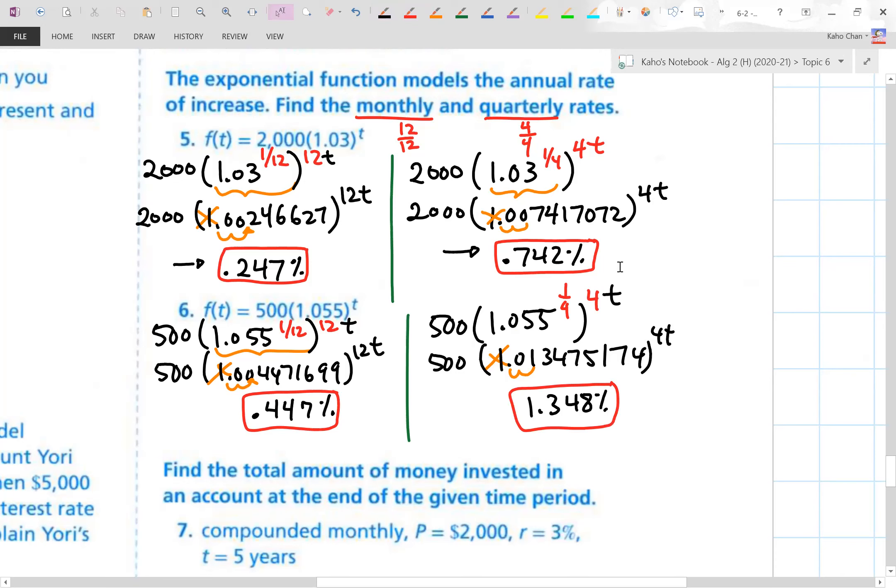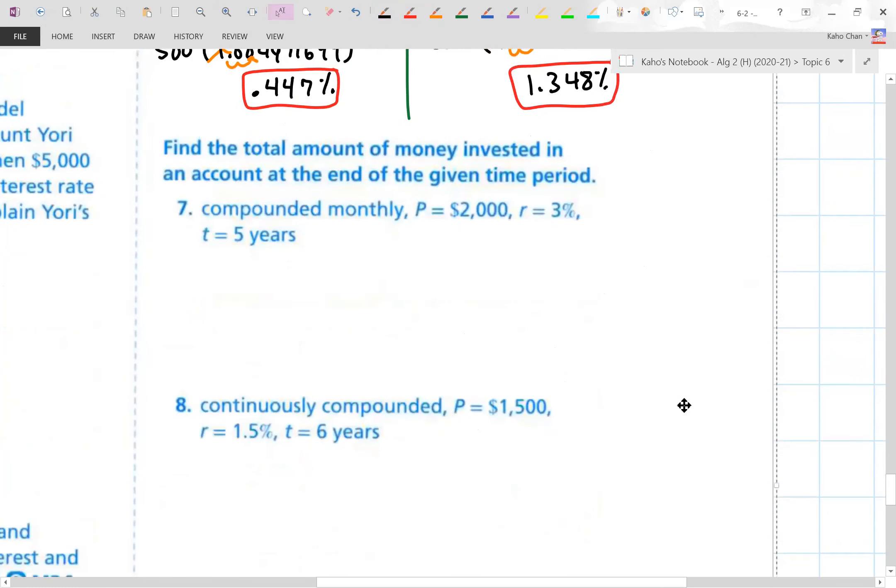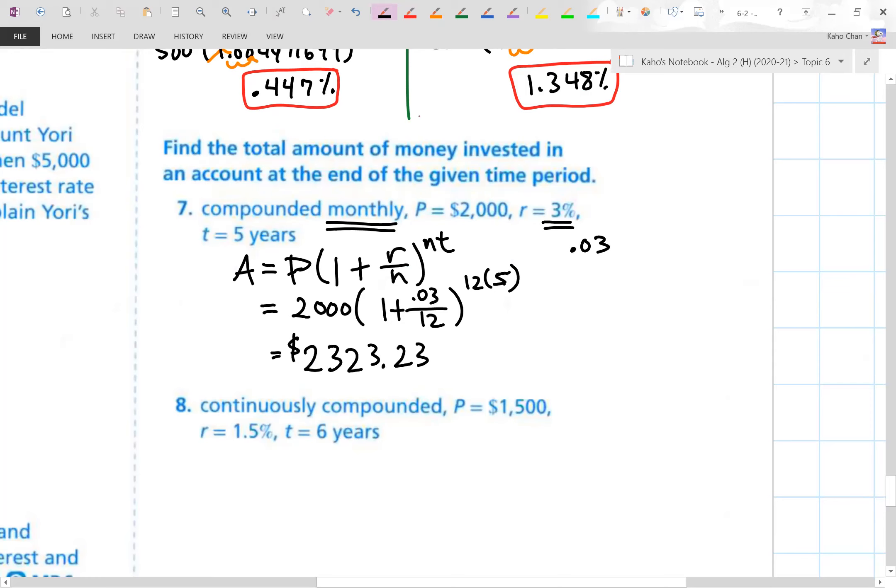Not too bad. How are we doing out there? All right. Back to money again. Find the total number of money invested in an account at the end of the given period. This is compounded monthly. So we're going to use the regular compounded monthly formula. A equals P times 1 plus R over N to the NT power. And this equals to $2,000. Times 1 plus interest rate. Oh, I got to convert that to 0.03 right there. And monthly there are 12 months in a year. And we're doing five years. Punch it into the calculator. We get this number. Not bad. Five years.